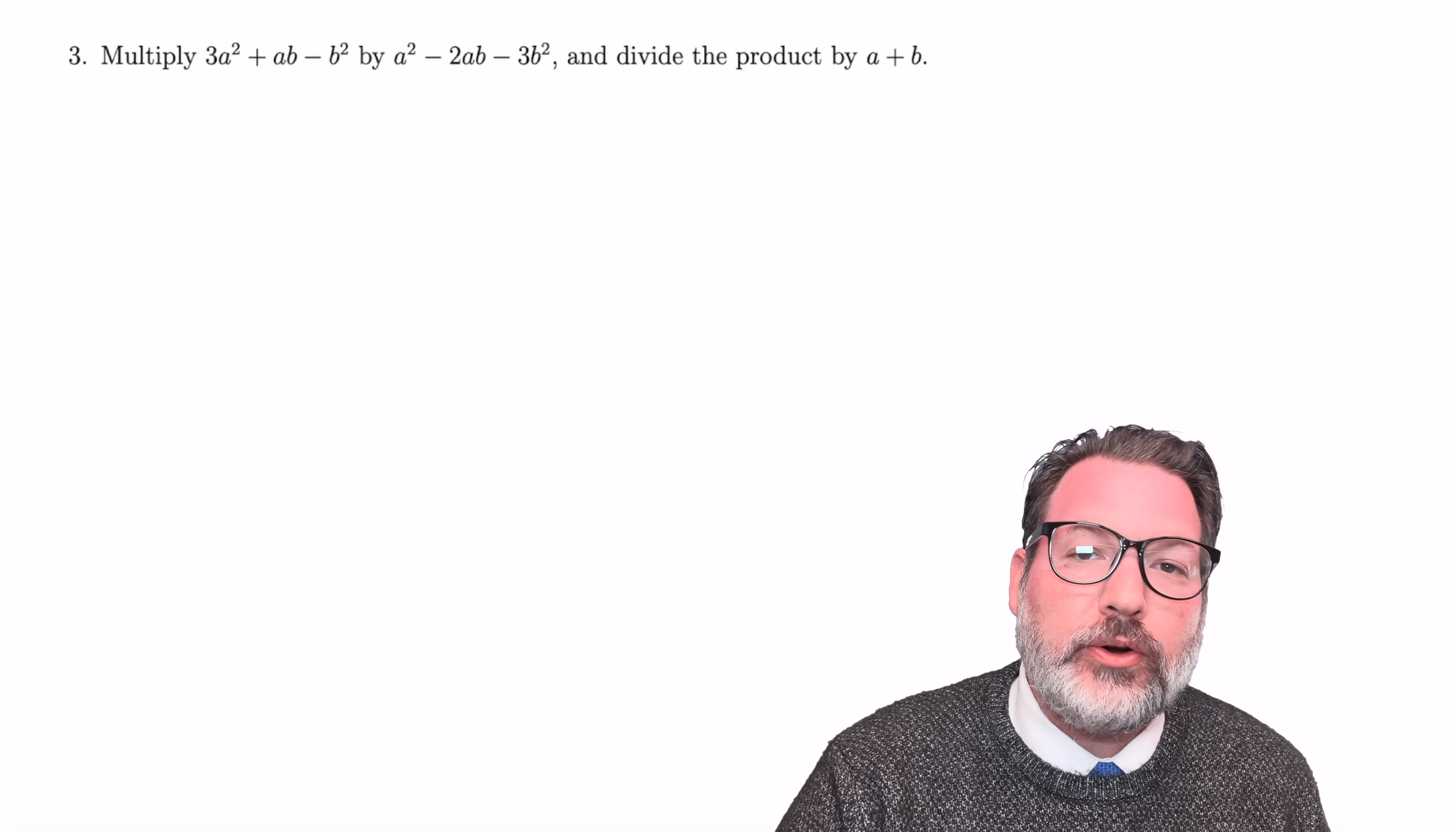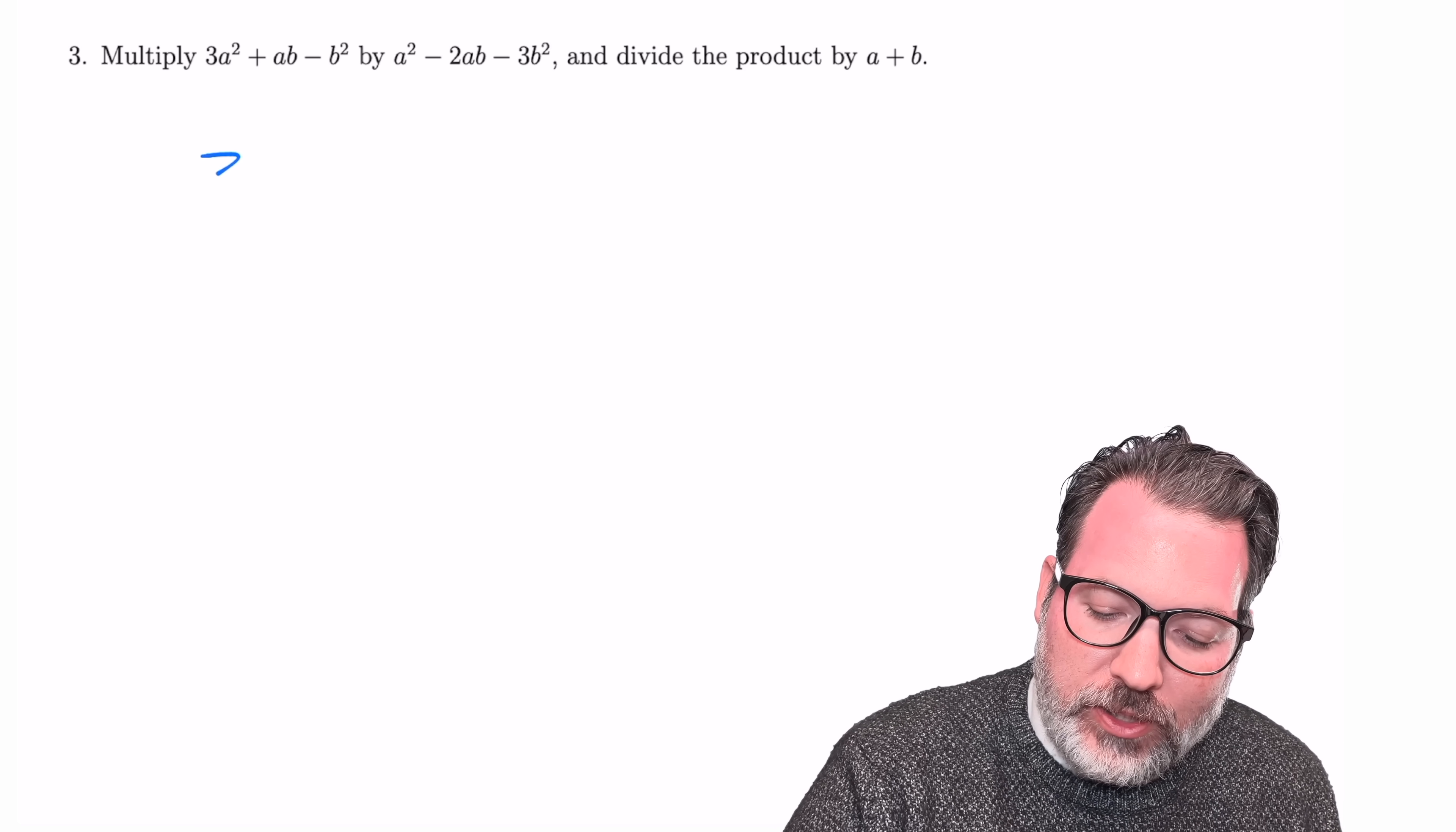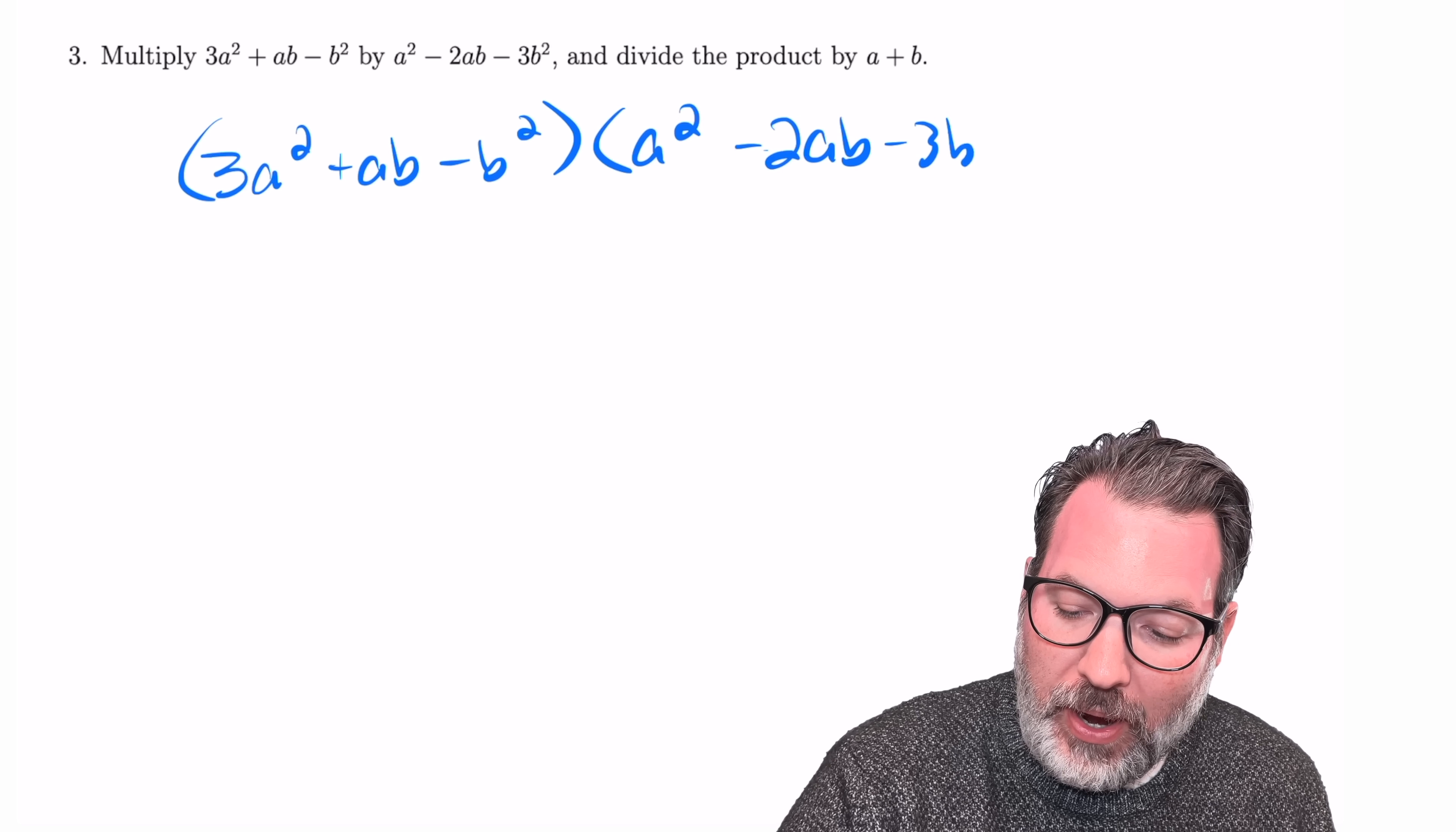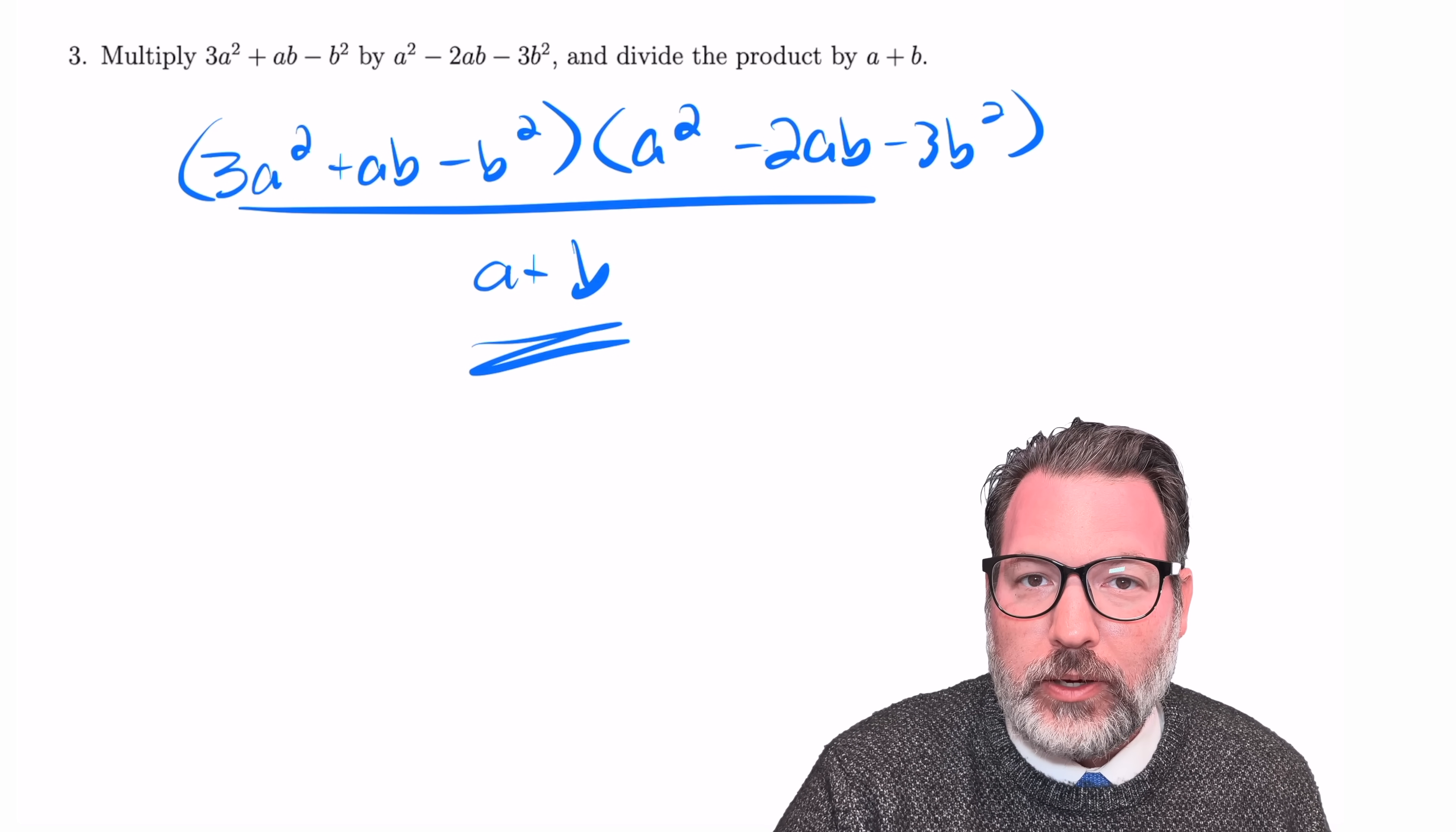Now, I'm not saying this didn't exist 150 years ago, but it definitely was not a prevalent technique 150 years ago. Nevertheless, it's going to be exactly what we need to answer this question from the MIT entrance exam efficiently. The question here wants us to take 3a squared plus ab minus b squared, multiply that by another trinomial, a squared minus 2ab minus 3b squared, and then divide that whole thing by a plus b. And right away, I should be a little suspicious.